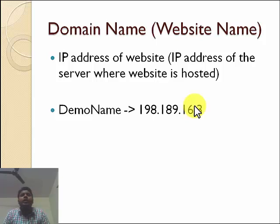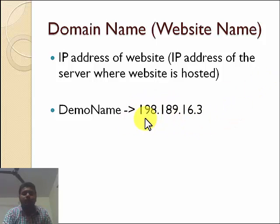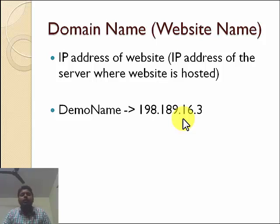Domain names are mapped to the IP addresses of websites. IP addresses are unique addresses of computers — my computer has a different IP address than yours, similar to house addresses. IP addresses are numerical, like 198.189.16.1. Remembering such numbers is very difficult, so we map IP addresses to domain names.